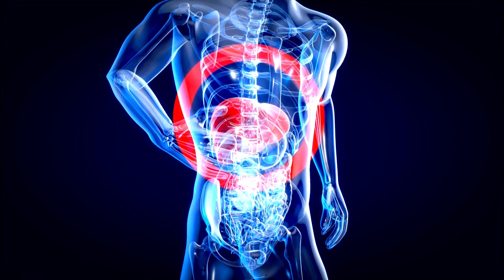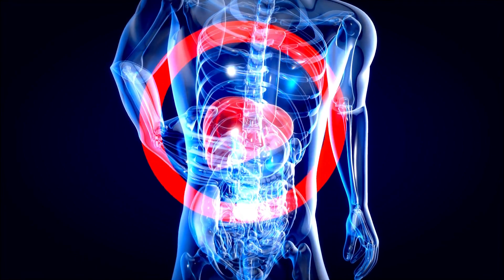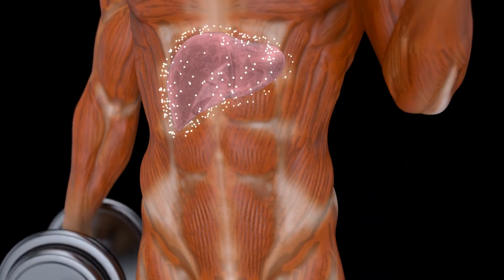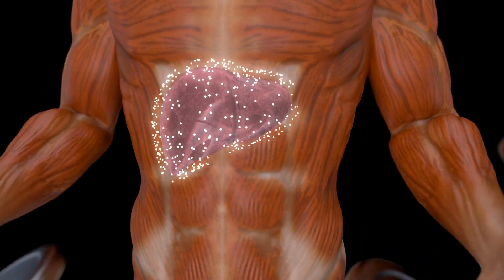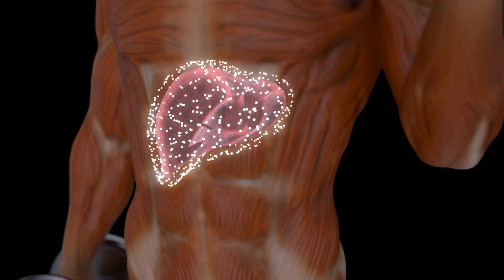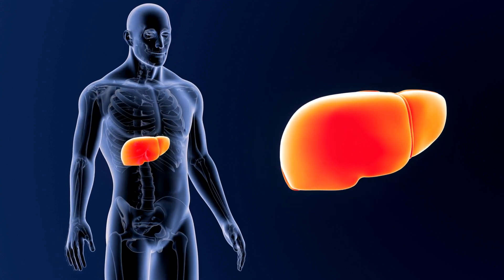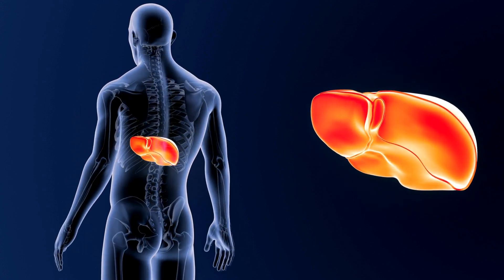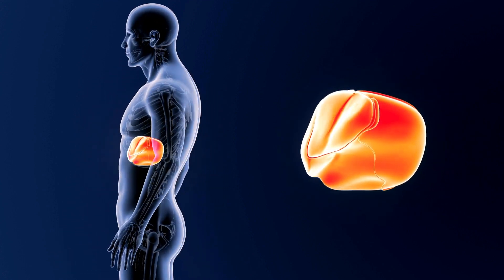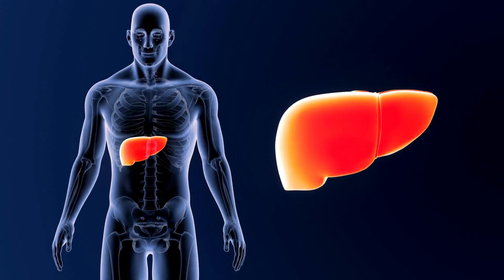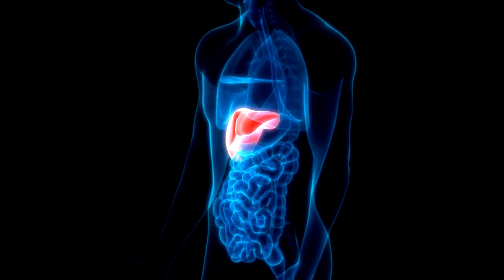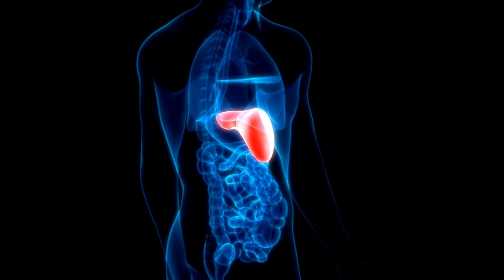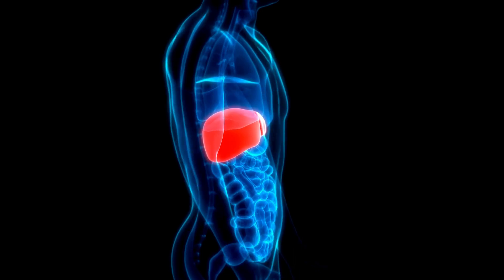Liver failure occurs either due to liver disease, intoxication of the liver, or chronic disease. Jaundice is a condition where bilirubin level along with bile pigment levels raises excessively; its two common causes are diseases in the hepatic and biliary tract. Hemochromatosis involves deposition of iron into the liver causing liver failure. Primary sclerosing cholangitis is a rare disease in which scarring and inflammation occur in the liver's bile duct. Primary biliary cirrhosis involves destruction of the bile duct and the development of permanent liver scarring.